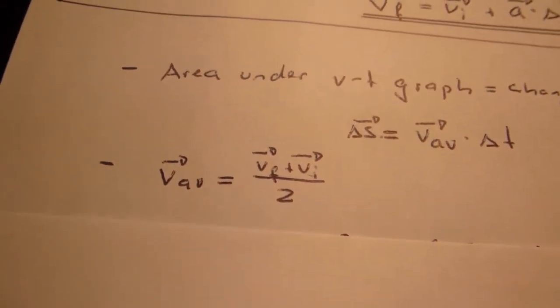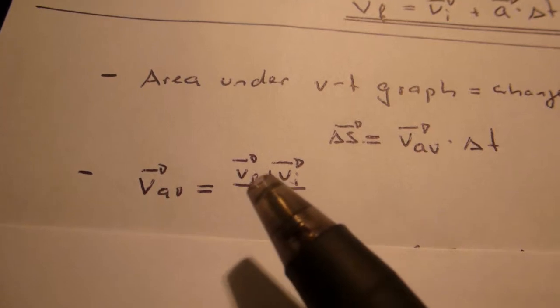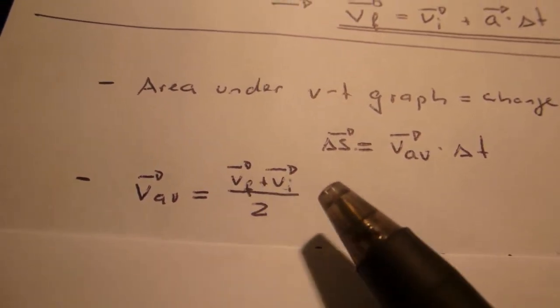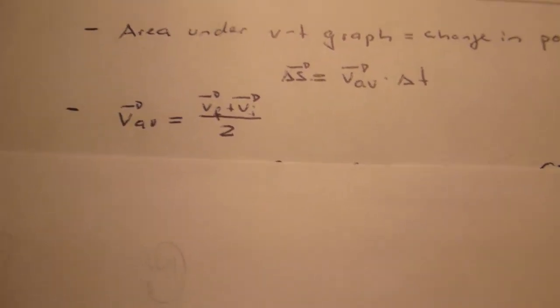How do we calculate V average? V average is simply you add up the initial and the final velocity and you divide it by 2.